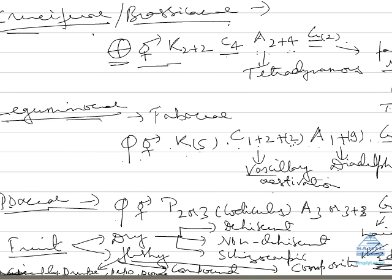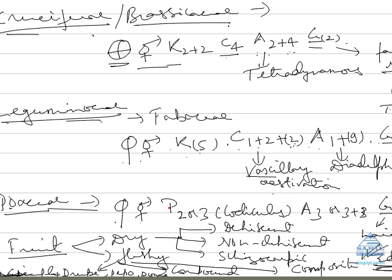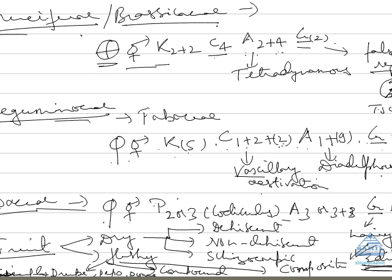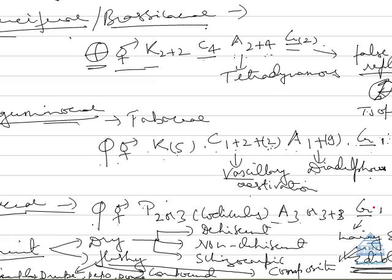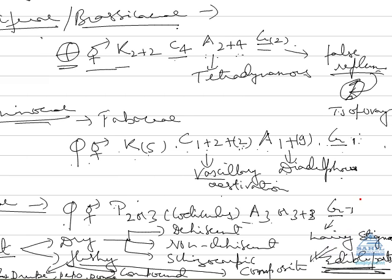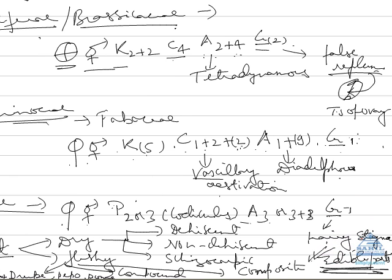Now in Poaceae, we are having again zygomorphic, bisexual condition. Perianth is whorl of sepal plus petal known as tepals. It is modified into lodicules sometimes. Androecium may be 3 or 3+3 as in rice. Then what we have, gynoecium is single, ovary superior, feathery stigma is present there.